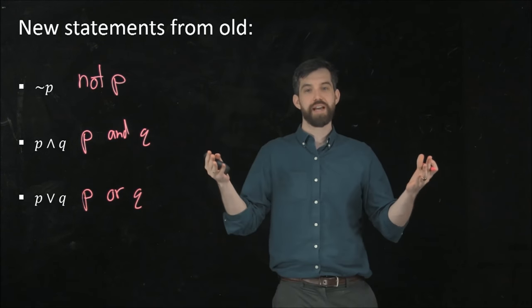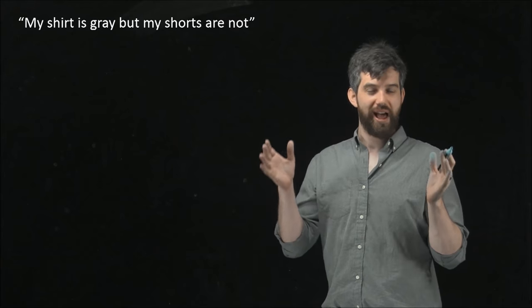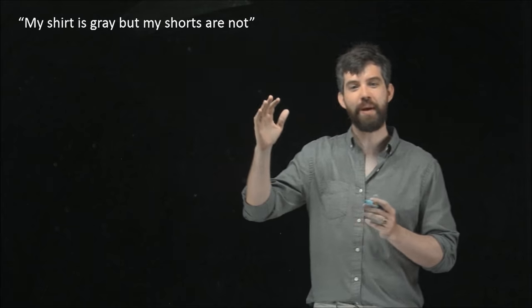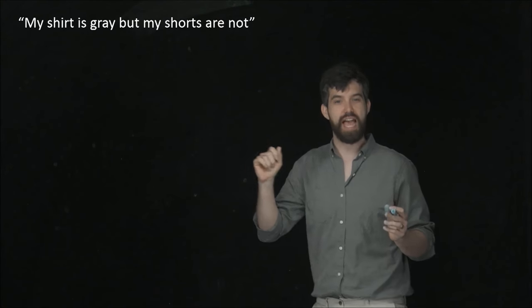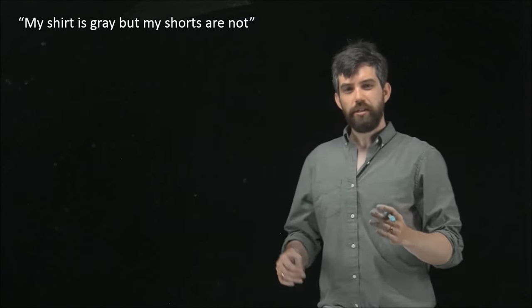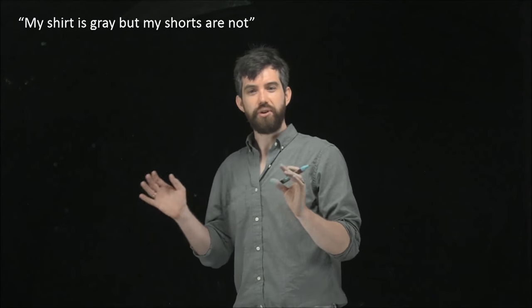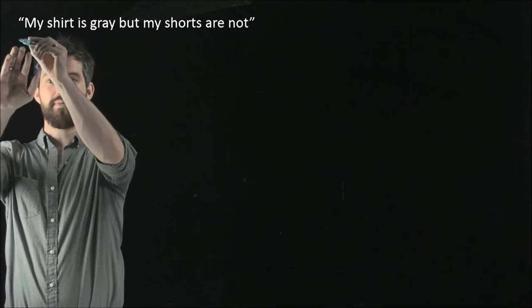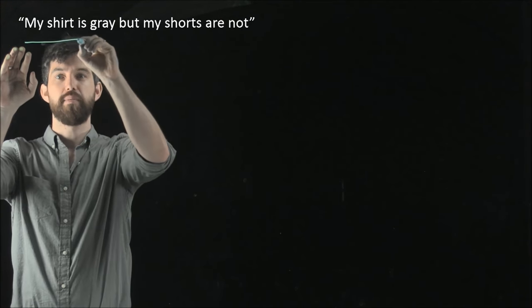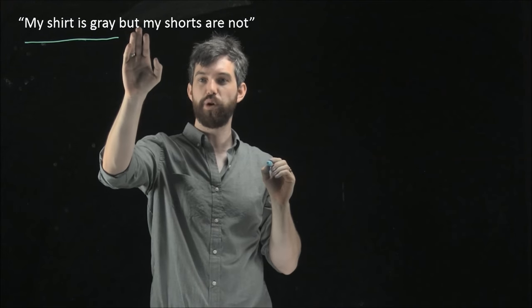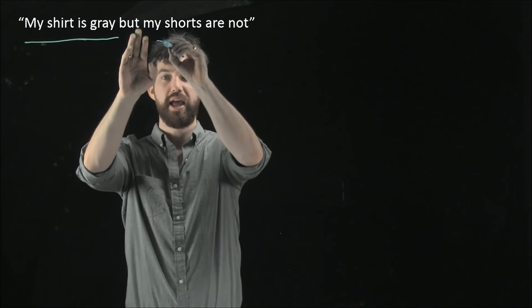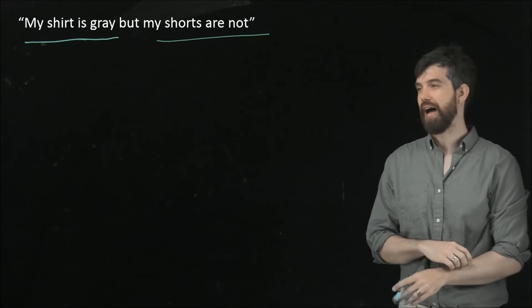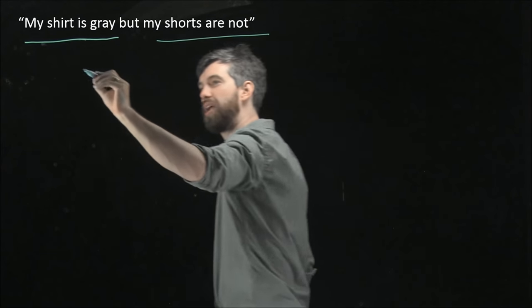Let's see how this works in the context of an example. Let's analyze this statement: My shirt is grey, but my shorts are not. And if I back up a little bit, you can see I've got tan or beige shorts going on here, and I've got my grey shirt. The first thing I'm going to do is notice that there are two pieces to this connected by the word but. The first is my shirt is grey, and then I have this word but, we're going to have to deal with that in a moment, and then we say, my shorts are not.